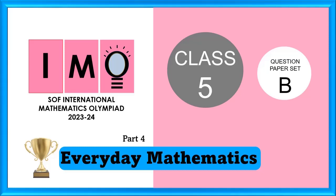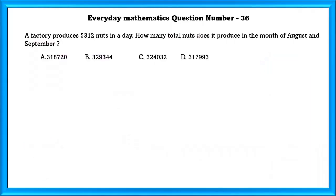Class 5 IMO set B. Everyday Mathematics question number 36. A factory produces 5,312 nuts in a day. How many total nuts does it produce in the month of August and September?